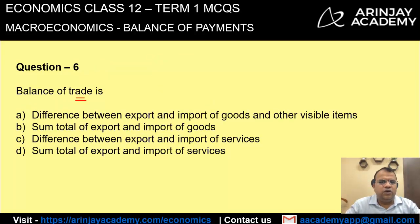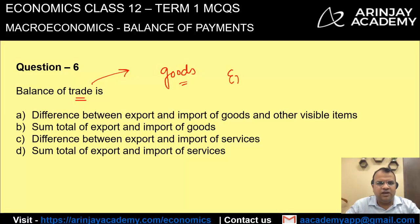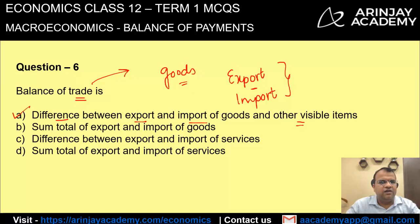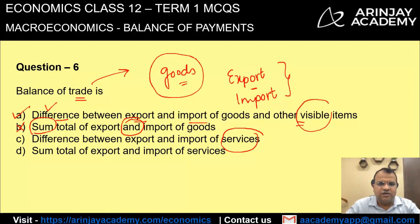What is balance of trade? Balance of trade relates to goods and other visible items. It is basically the difference between exports and imports of goods and visible items — option one is correct. Option two — the sum total of exports and imports — is wrong; it is the difference, not the sum. Option three — difference between export and import of services — is also wrong, because balance of trade is in respect of goods and visible items, not services. Therefore, the correct answer is option A.